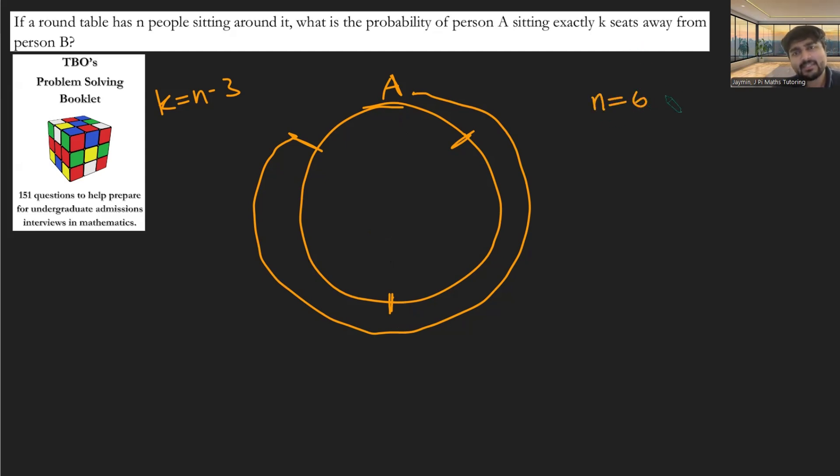So let's look at when n equals six. So we've got six people sat on a table. And we've got A there in position one. And we've got position two there, position three here, four. Four is kind of diametrically opposite. Five, and then six, like so. So now, in this very special case, if k equals three, which notice is n over two, then there's only one spot that B could be sat in, to be sitting k seats away from A, which is diametrically opposite.